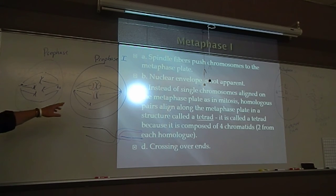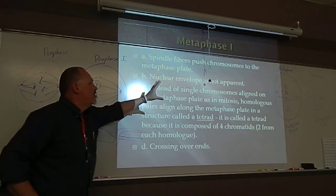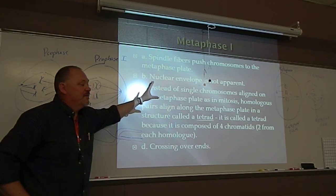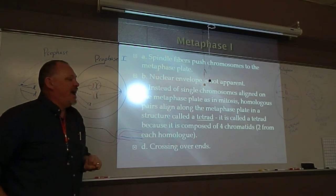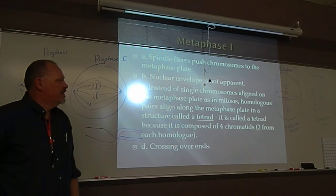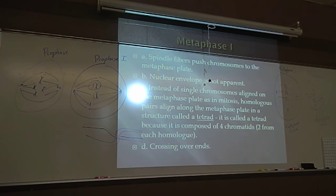But, in metaphase one, the spindle fibers push the chromosomes to the middle of the plate, called the metaphase plate, middle of the cell. But instead of single file rank, the homologs are pushed to the center. And that structure, the two homologs together, and the metaphase plate is called a tetrad. How many is tetra? Four, right? Tetra means four.